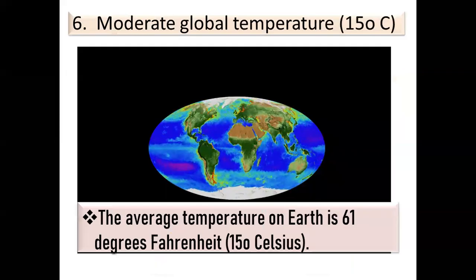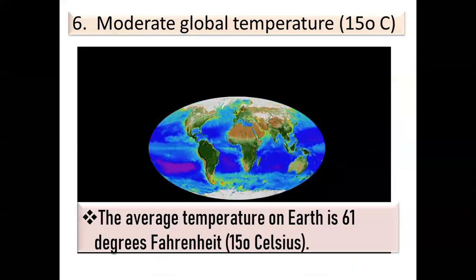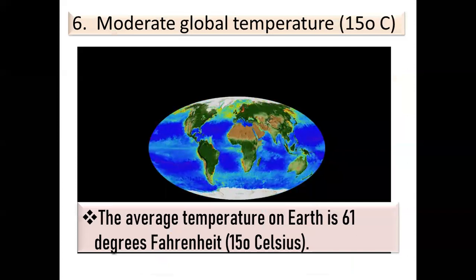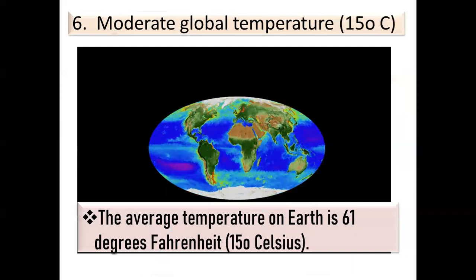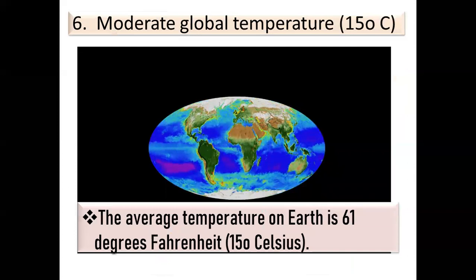Next is moderate global temperature. The average temperature on Earth is 61 degrees Fahrenheit or 15 degrees Celsius.